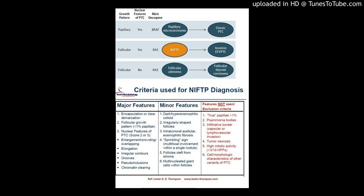Further exclusion criteria: true papillary structures in more than 1% of tumor volume, psammoma bodies, infiltrative border, tumor necrosis not associated with fine needle aspiration (FNA), and increased mitosis defined as at least 3 per 10 high-power fields (HPF).